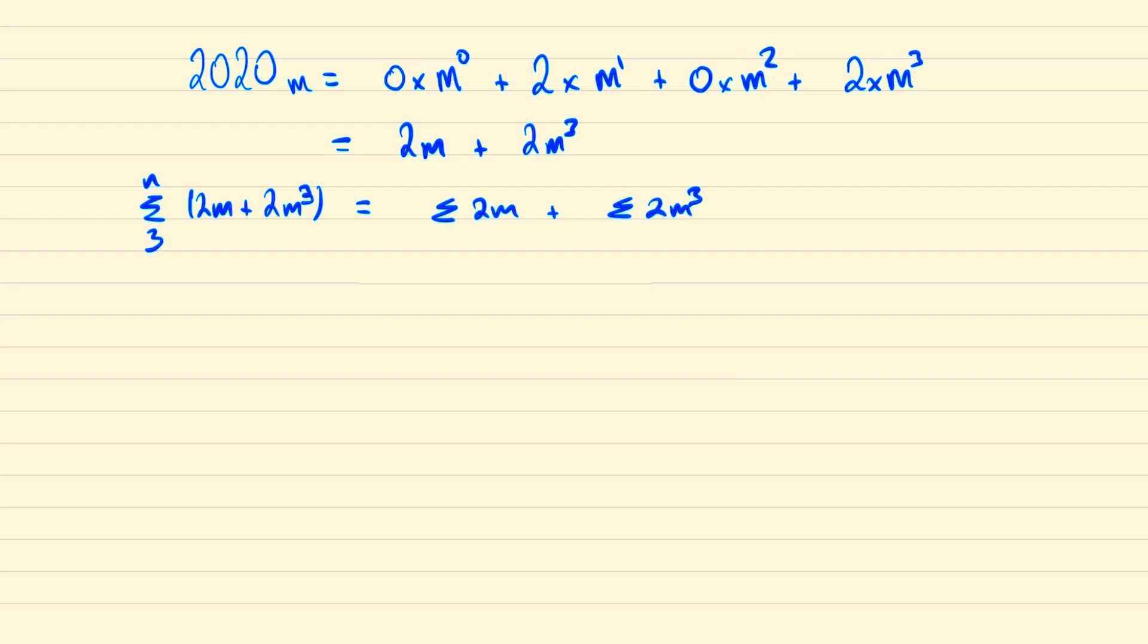Factoring out the 2 we can write this as 2 lots of the sum of m plus 2 lots of the sum of m cubed. Summing m from 3 to n is the same as going from 1 to n and then we'll just minus 1 minus 2.